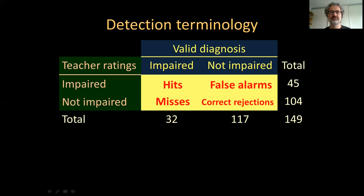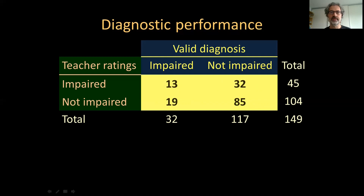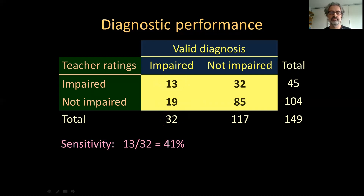So how is the diagnostic performance of the instrument evaluated based on the hits, misses, false alarms, and correct rejections? The first important index is the proportion of impaired children who are correctly detected — how many of the impaired children are actually detected by this screening checklist. If we divide 13 by 32, we derive what is called the sensitivity of the instrument, and that's 41%. The teacher rating checklist only detects 41% of language impaired children, which is not a very high proportion.